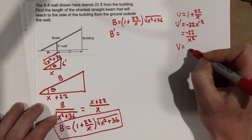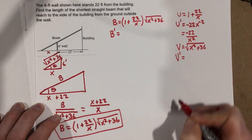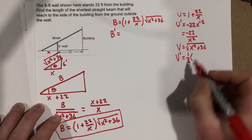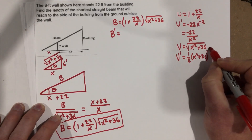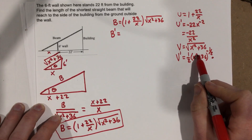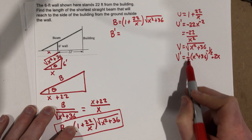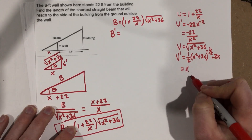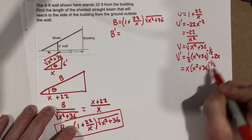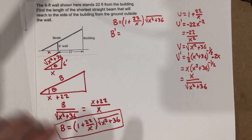V equals root of x squared plus 36. For V prime, using the chain rule: bring the 1/2 power to the front, giving 1/2 times x squared plus 36 to the negative 1/2, times the derivative of the inside, which is 2x. The 1/2 and 2x simplify to just x, so V prime equals x over root of x squared plus 36.